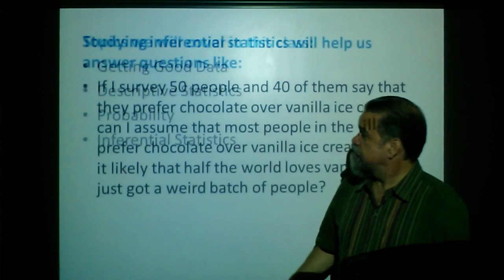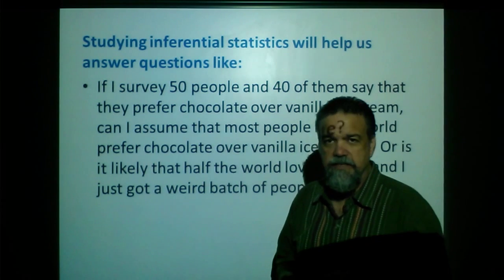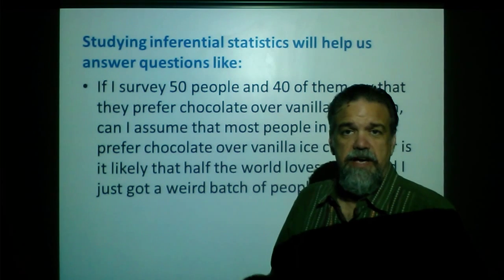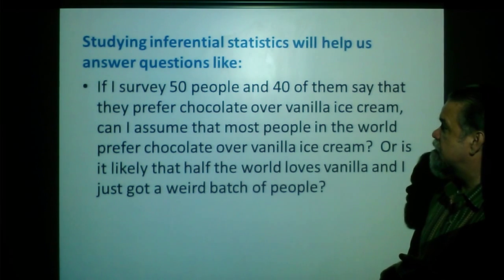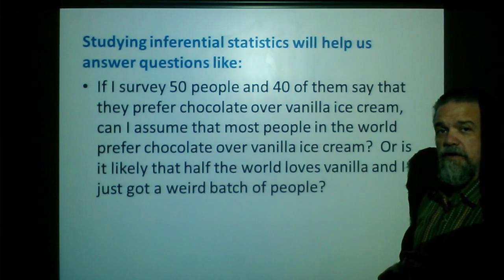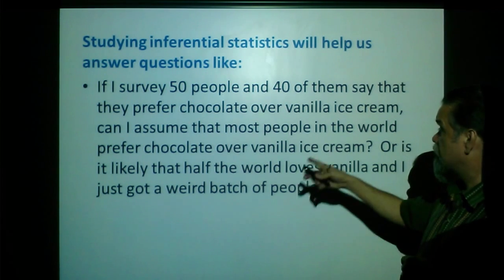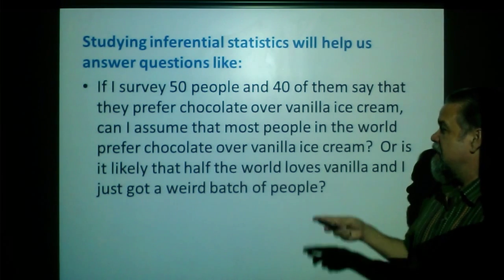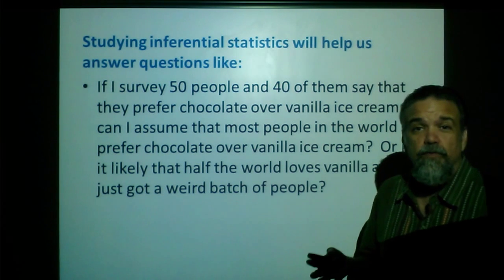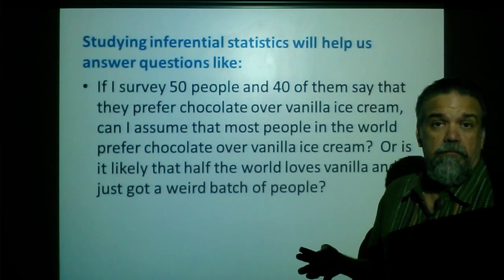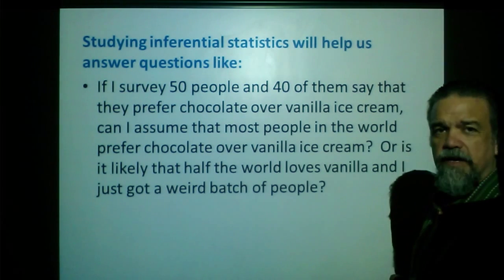So once I take this stats class, I'm going to be able to answer some questions. Questions like, let's say I survey 50 people and 40 of them say that they prefer chocolate over vanilla ice cream. Well, if that's true, can I assume that most people in the whole world prefer chocolate over vanilla ice cream? Or, is it likely that about half the world loves vanilla, half the world loves chocolate, and I just happen to get a weird bunch of people? I don't know. So, that's when we would use our probability rules, and we'd figure out just how likely that is.